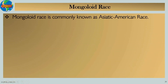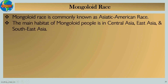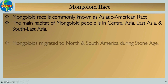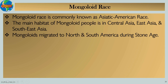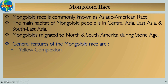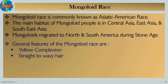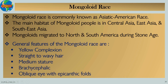Mongoloid race: The Mongoloid race is commonly known as the Asiatic-American race. The main habitat of Mongoloid people is in Central Asia, East Asia, and Southeast Asia. Mongoloids migrated to North and South America during the Stone Age. General features of the Mongoloid race are: yellow complexion; straight to wavy (leiotrichous) hair; medium stature; brachycephalic head; and oblique eyes with epicanthic folds — the most distinguishing feature of the Mongoloid race.